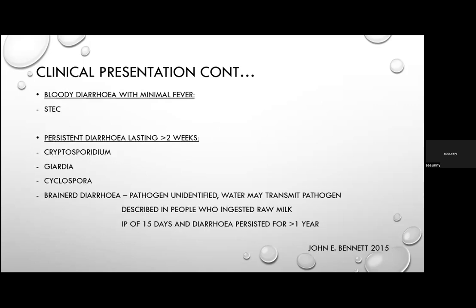Bloody diarrhoea with minimal fever should prompt consideration of Shiga toxin-producing E. coli. Persistent diarrhoea lasting more than two weeks: consider Cryptosporidium, Giardia, and Cyclospora. There is also a concept of Brainerd diarrhoea, transmitted through water or raw unchlorinated milk, with an incubation of about two weeks and persistent diarrhoea lasting even beyond a year — the implicated pathogen has not yet been identified.